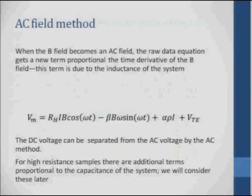There's one other correction that needs to be added because you have to mount the sample some way in your magnet. You have it hanging in the magnet with wires making contacts. So you have a changing field in the loops of wires, and you get an inductive voltage picked up in the signal as well as the Hall voltage. That is proportional to the derivative of B, and it is 90 degrees out of phase. These are AC voltages.